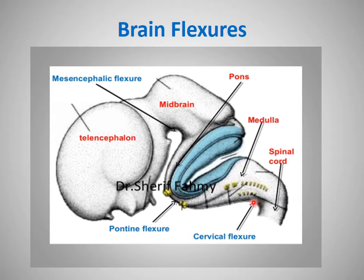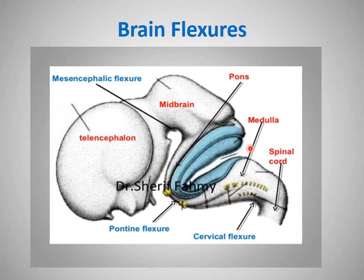Between the mesencephalic and cervical flexures, there is unequal growth and differentiation of the neural tube. Because of this, another flexure forms in the opposite direction called the pontine flexure. The pontine flexure causes thinning of the roof plate of the fourth ventricle. Due to this unequal growth and differentiation, transverse sections cut at different levels of the neural tube show different boundaries, and the gray matter and white matter differ from those of the spinal cord.